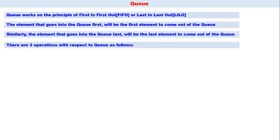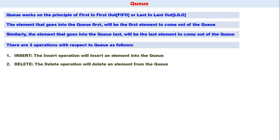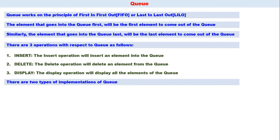There are three operations with respect to a queue. First, Insert — the insert operation will insert an element into the queue. Second, Delete — the delete operation will delete an element from the queue. Third, Display — the display operation will display all the elements of the queue.